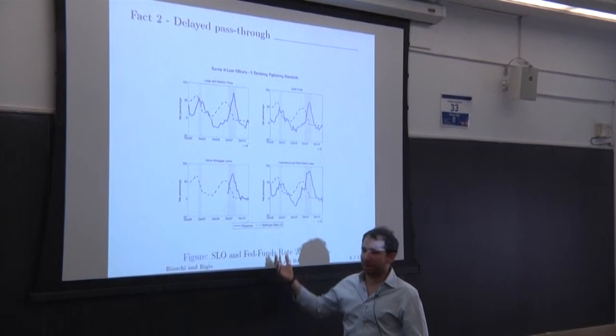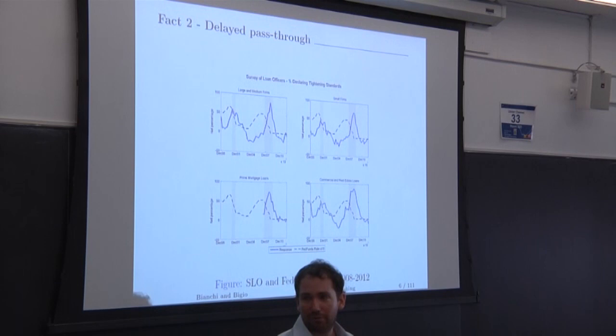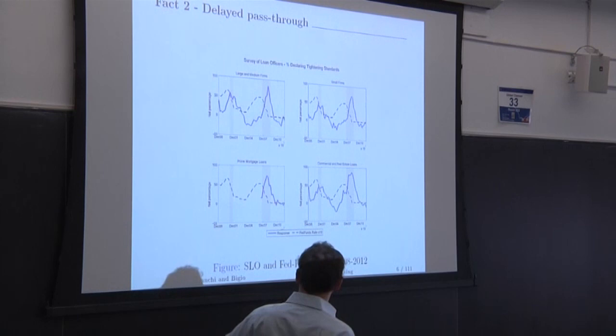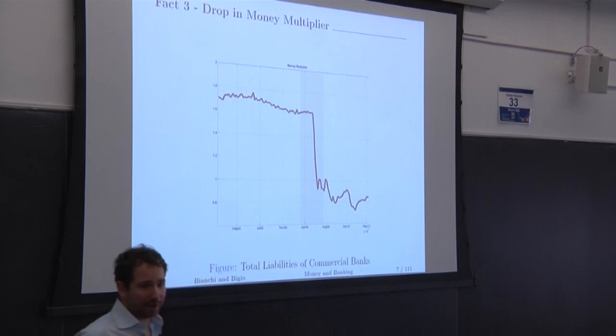Other things that happen during the crisis is that oftentimes in every other episode in time when the Fed reduces its interest rates, you see a rapid response by the banking sector. Maybe three months after, maybe six months after you see a reduction in interest rates, banks are responding by lending more. You don't see this during the recession. It takes over a year to start seeing an improvement in lending conditions.